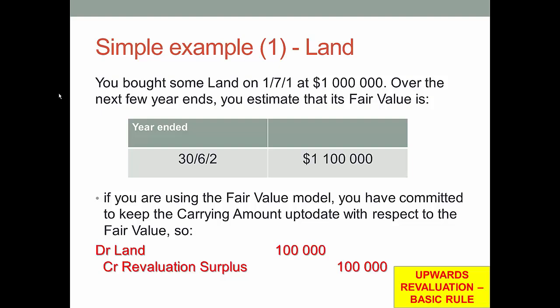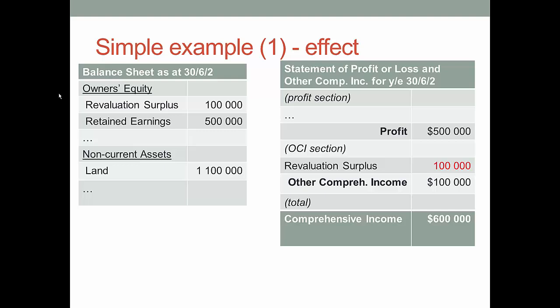Let's look at the effect on the financial statements. On the statement of profit or loss and comprehensive income, we've got the revaluation surplus appearing at $100,000. Notice that's not part of profit - that's part of the other comprehensive income section. So it flows through into revaluation surplus but doesn't flow through profit. On the balance sheet, we see the revaluation surplus having a credit balance of $100,000, and there's the land under non-current assets at a value of $1.1 million. So that's a simple upward revaluation.